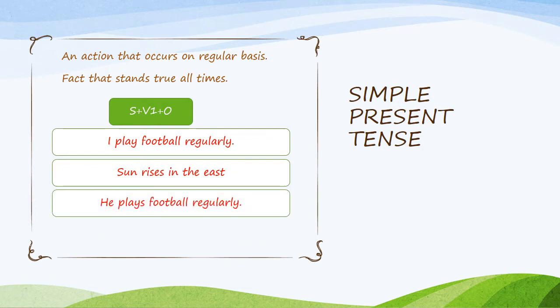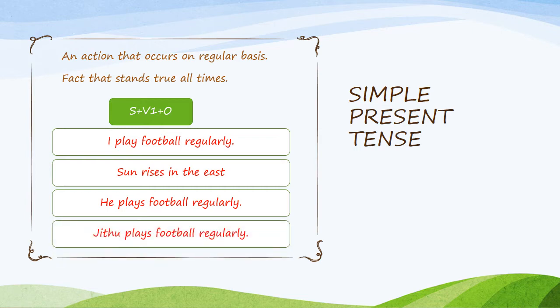He plays football regularly. According to singular and plural, for third person singular you need to add S — so: he plays, she plays, Jitto plays football regularly. The structure of simple present tense is: Subject plus verb first form plus object. For example: I play football regularly. Sun rises in the east. He plays football regularly.